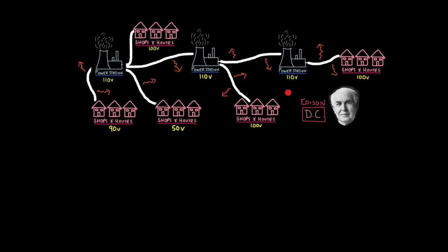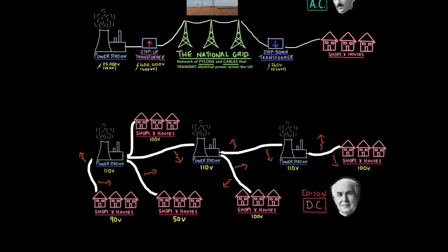Thomas Edison fully backed the idea of direct current. And when you put them next to each other, you can see some glaring differences. For one, it was much harder to vary the output voltage. This meant you needed different cables supplying different locations with different voltages according to their needs. This was costly and not very efficient.